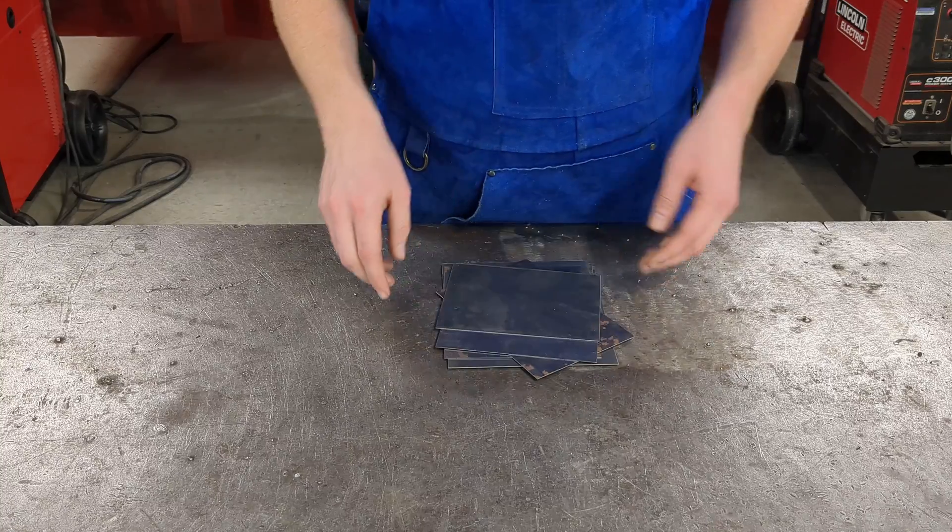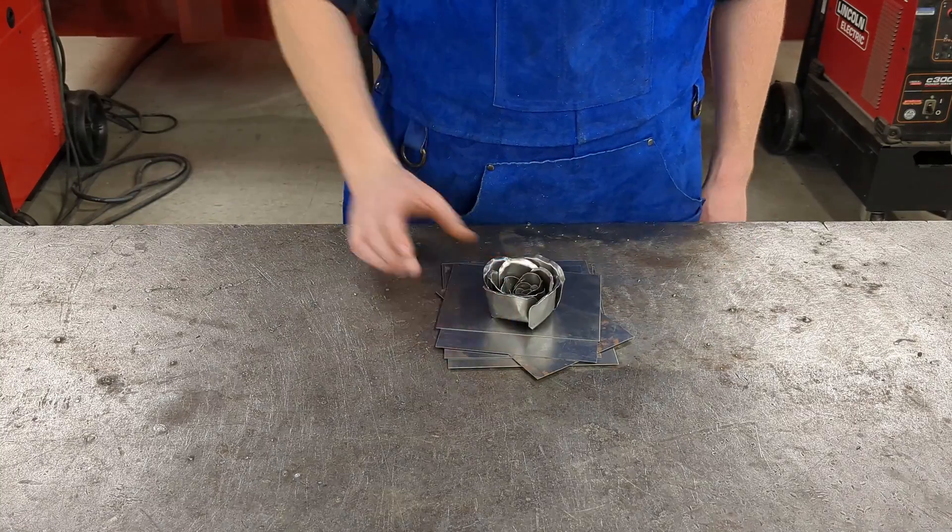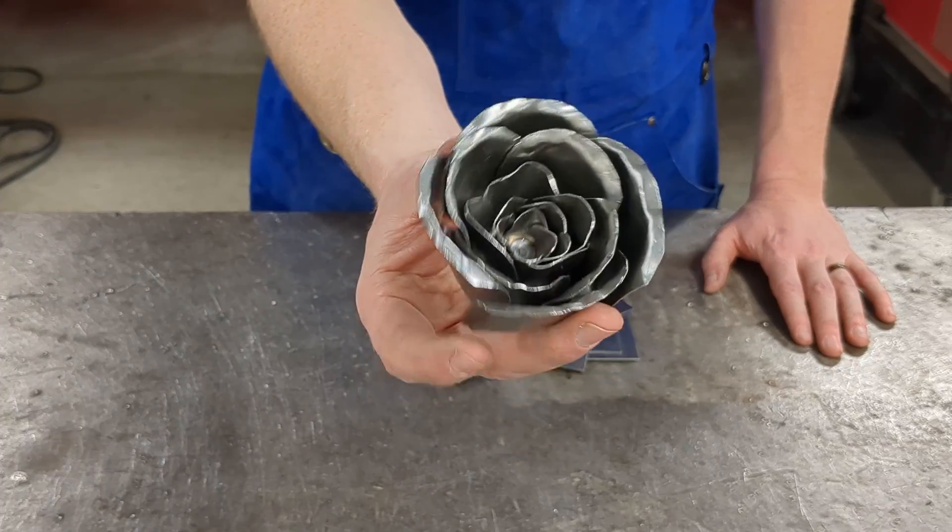Today we're here at the scrap barrel to find some sheet metal. We're going to take this pile of scrap and turn it into this nice looking flower. Here's a little better view of it.